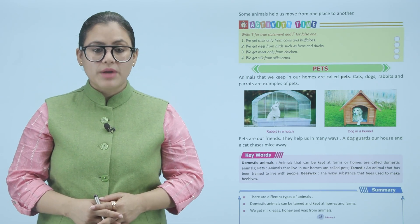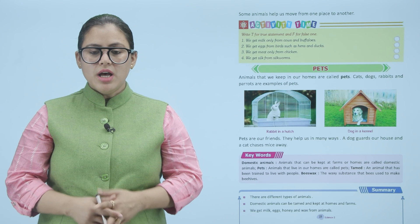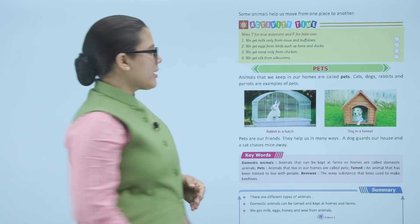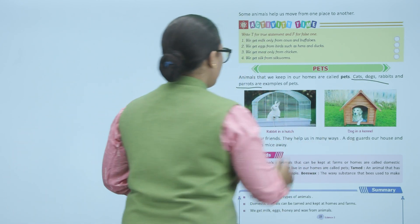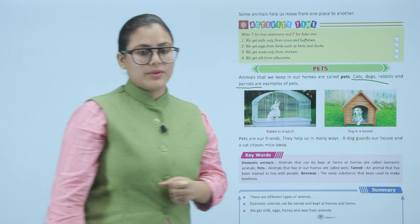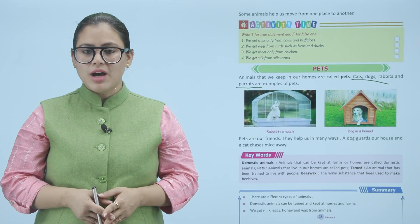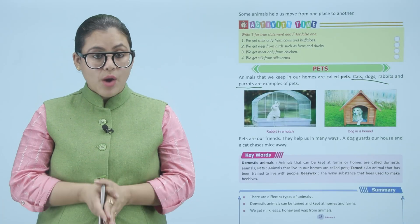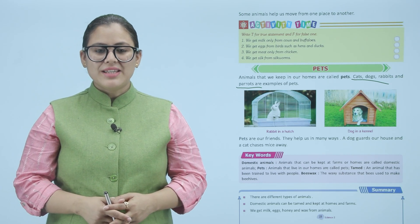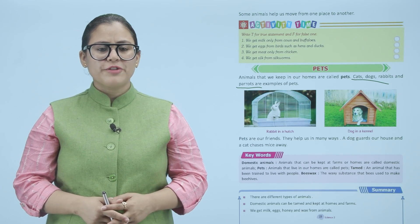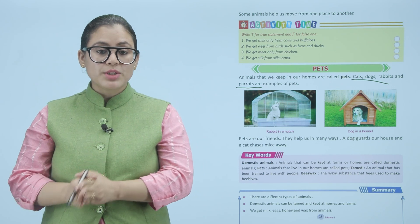Pets: animals that we keep in our homes are called pets. Cats, dogs, rabbits and parrots are examples of pets. Pets are our friends and they help us in many ways. A dog guards our house and a cat chases mice away.